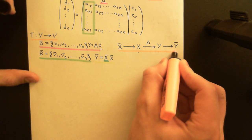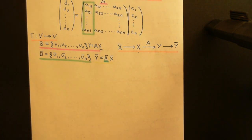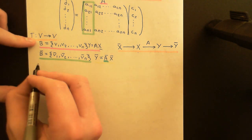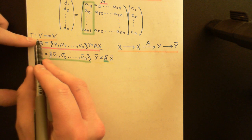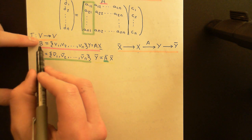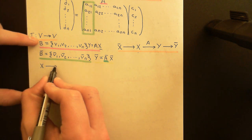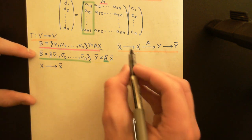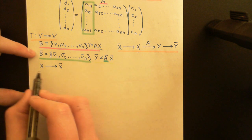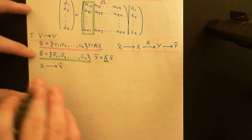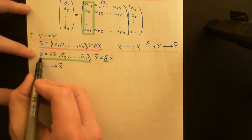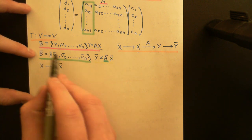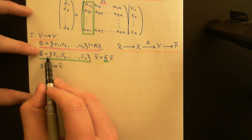What we need to discuss is how to actually change basis. If I have the coordinates of a vector with respect to basis B and want to transform them into coordinates with respect to basis B-bar, how do I do it? It's conventional to start by looking at this direction — going from the old basis to the new basis.